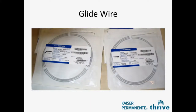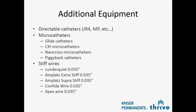A glide wire is really key for snaring and for creating AV rails — it comes in curved, straight, and angled versions in various lengths. If you are going to be doing an AV rail, more than likely you'll need the longest version possible. Additional equipment includes directable catheters with snares in any shape you need, as well as micro catheters: glide catheters, CXI, Navicross, and piggyback catheters, using telescoping techniques to deliver equipment where support is limited. Various stiff wires can then be exchanged in once the rail is created. The safari wire is also becoming very commonly used.